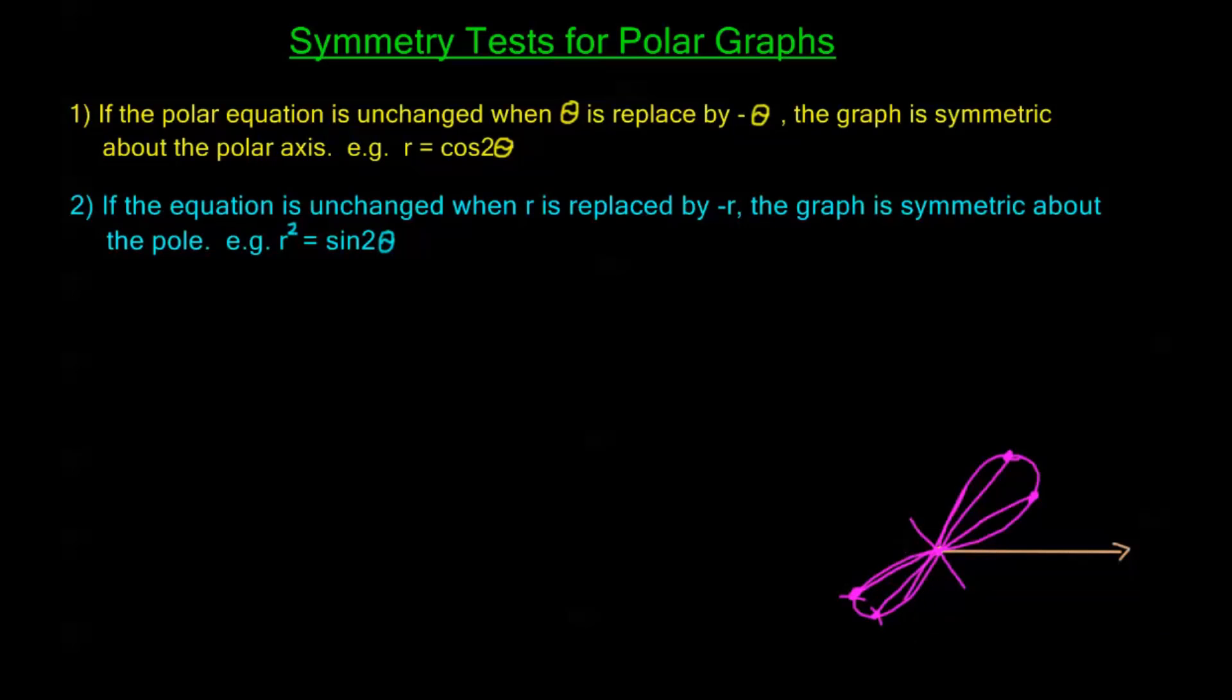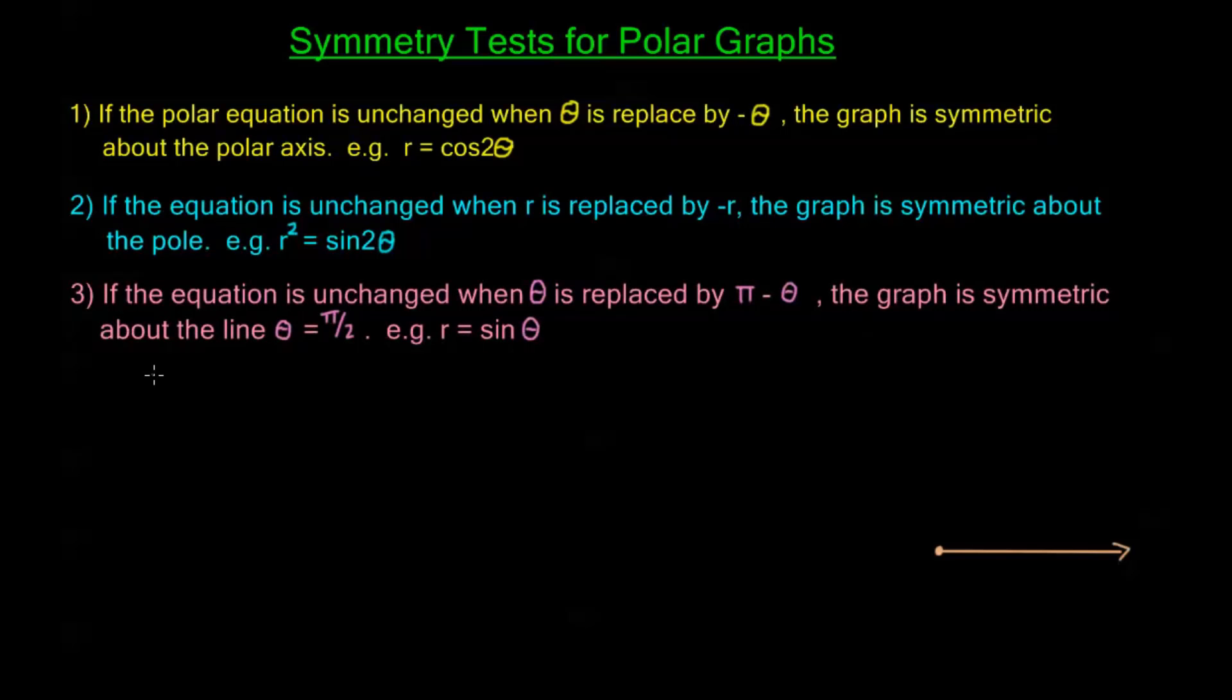All right, let me clean this up, we'll look at our last test. Now my third and final symmetry test says, if the equation is unchanged when theta is replaced by pi minus theta, the graph is symmetric about the line theta equals pi over 2. Now theta equals pi over 2 is this line right here. This is my theta equals pi over 2. It's the would-be y-axis if we were still in rectangular coordinates.